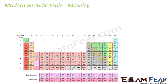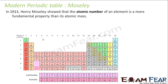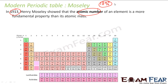Now let's study the modern periodic table based on Moseley. This guy Moseley, in 1913, showed that atomic number is a better fundamental property than atomic mass. And please note, atomic number itself was found by him. Because till 1896, nobody knew what an electron was — atomic mass was found using stoichiometric equations and chemical reactions.